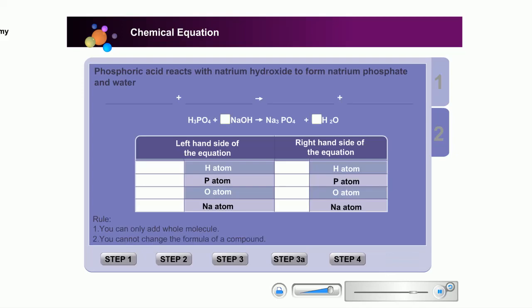Try to write a balanced equation for phosphoric acid reacts with sodium hydroxide to form sodium phosphate and water.